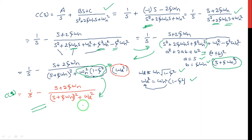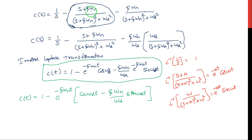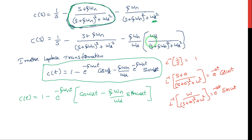We now need to split the numerator (s + 2ζωn) into (s + ζωn) plus ζωn, separating out ζωn as a distinct term. This is necessary because we need to match the inverse Laplace transform standard formulas. We divide the output into three parts. For the term with ωd in the denominator, we multiply and divide by ωd to match the standard form.